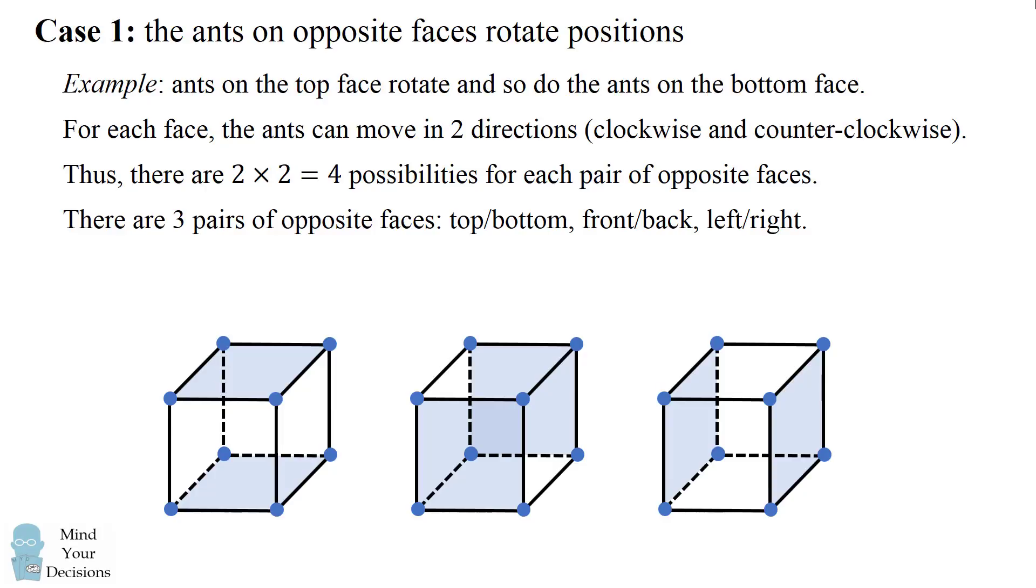So how many different ways have we just figured out? Well, there are four different ways for each pair of opposite faces and there are three kinds of opposite faces. That makes for four times three which equals twelve ways the ants do not collide. But there is more.